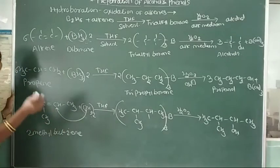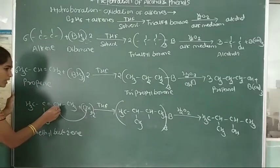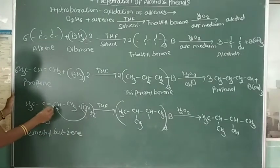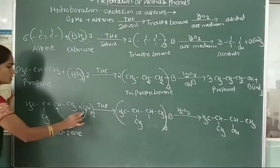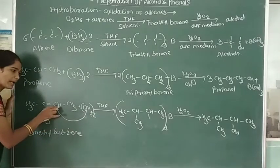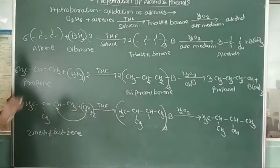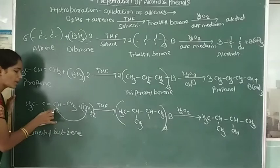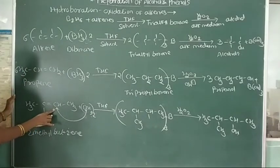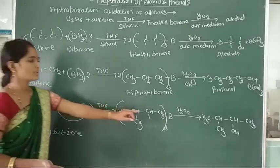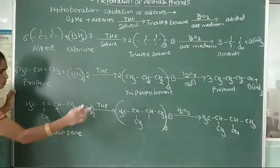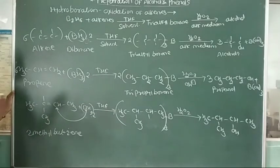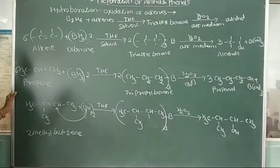The carbon atom receives the boron atom. Therefore, the boron gets attached to that carbon. And replacement of this boron by OH gives formation of alcohol. The OH is attached to the carbon atom which carries the maximum number of hydrogen atoms. This is because the reaction follows anti-Markovnikov's rule.